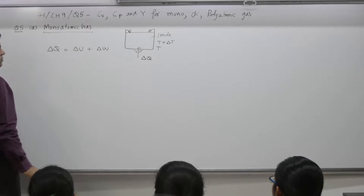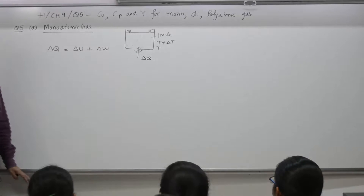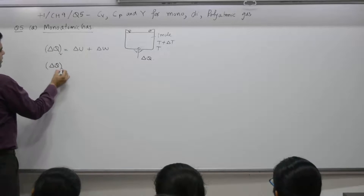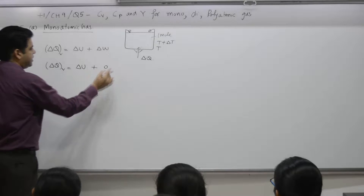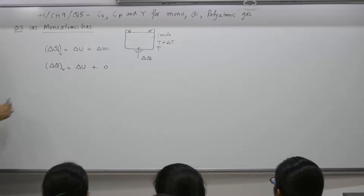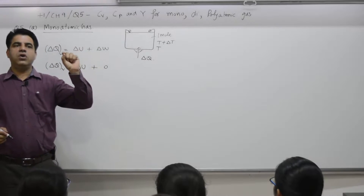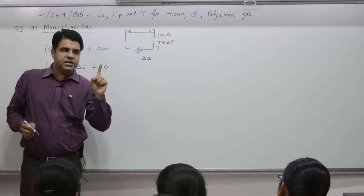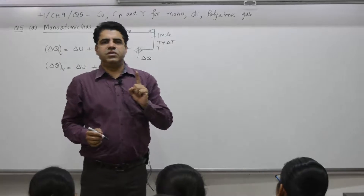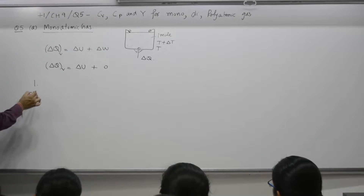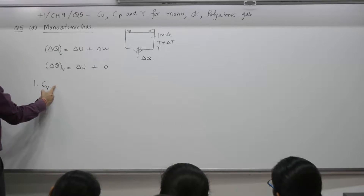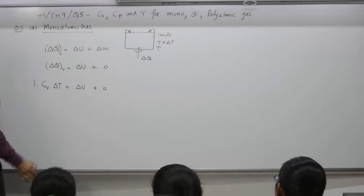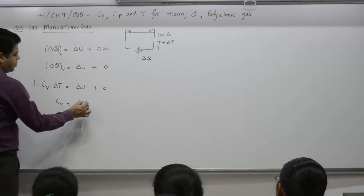Delta Q equals delta U plus delta W. There is no work done — mechanical work done is zero. Whatever heat you are supplying, we call this heat supplied at constant volume. That heat is used to increase internal energy only. As per definition, Cv is the amount of heat required to raise the temperature of one mole of gas by one degree C at constant volume. So, Cv times delta T equals delta U, giving Cv equals delta U by delta T.